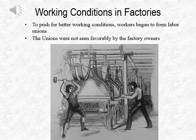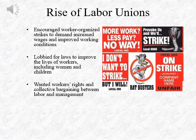This led to a push for better working conditions when workers began to form labor unions. The unions were not seen favorably by factory owners. Labor unions were groups or organizations that encouraged worker-organized strikes to demand increased wages and improved working conditions. They lobbied parliament for laws to improve the lives of workers, including specifically for women and children. They also pushed for workers' rights and collective bargaining between labor and management to ensure equality, safety, and fairness for all workers.